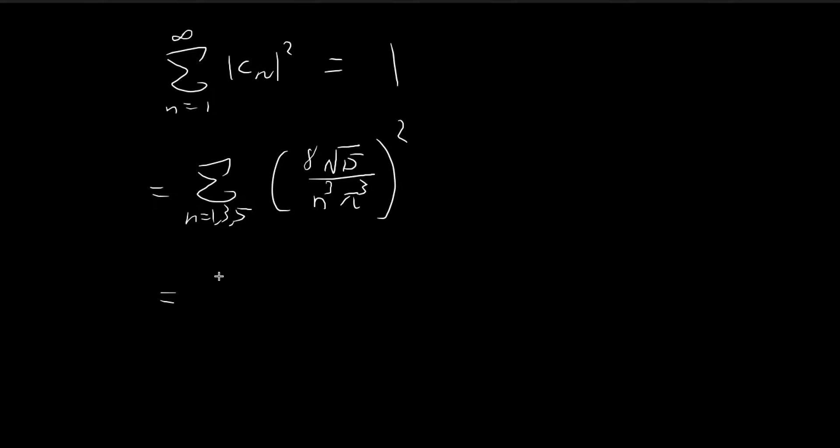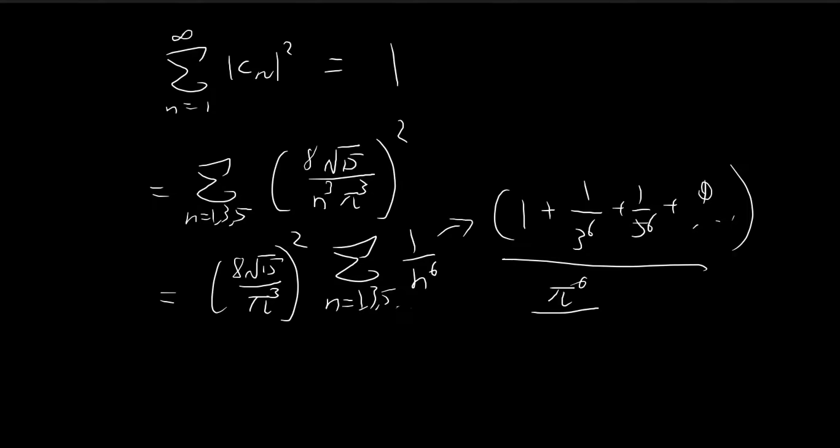All you have to do is drag all the constants out: (8√15/π³)² times the summation of 1/n⁶ for n equal to all the odd numbers. This infinite series is essentially equal to 1 + 1/3⁶ + 1/5⁶ and so on. There is actually no fast way I can show you how to derive the value of this. You're going to have to look up a table. It turns out this is equal to π⁶/960.